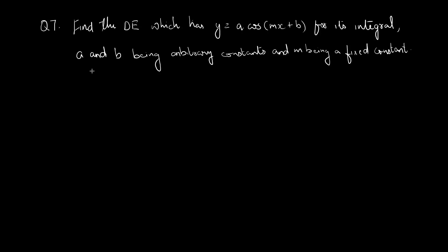Question 7: Find the differential equation which has y equal to a·cos(mx + b) as its general solution, where a and b are arbitrary constants and m is a fixed constant. We have a family of curves y = a·cos(mx + b) with two arbitrary constants a and b. We need to eliminate these two arbitrary constants to get the differential equation, which will be of second order since we have two arbitrary constants.